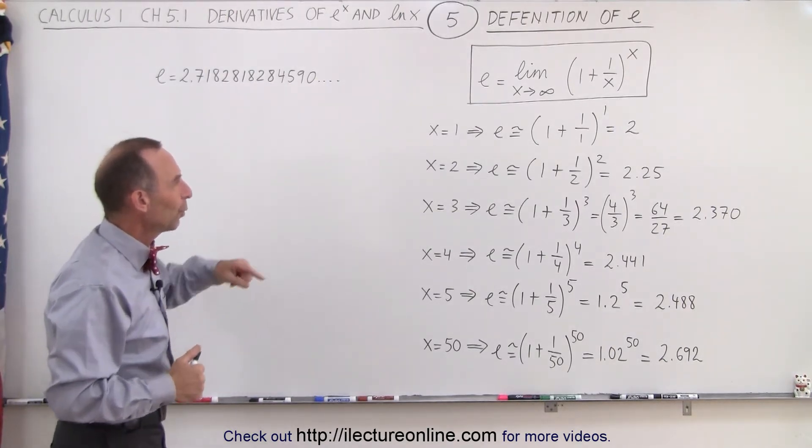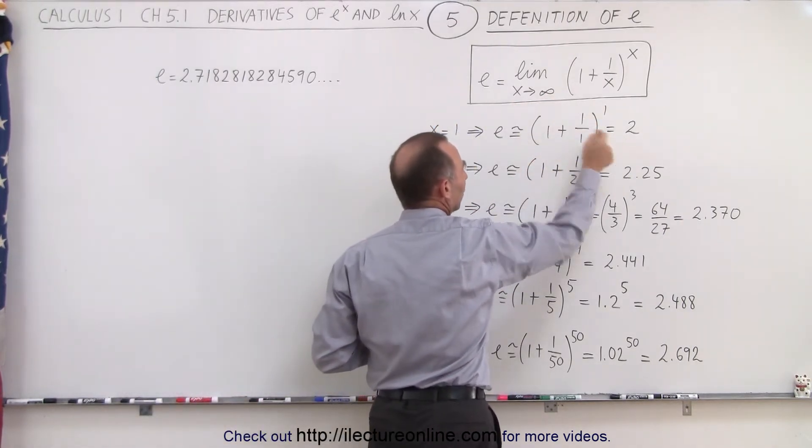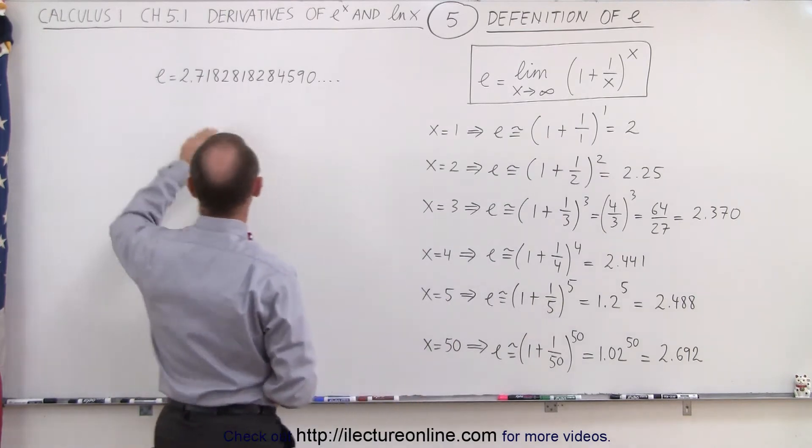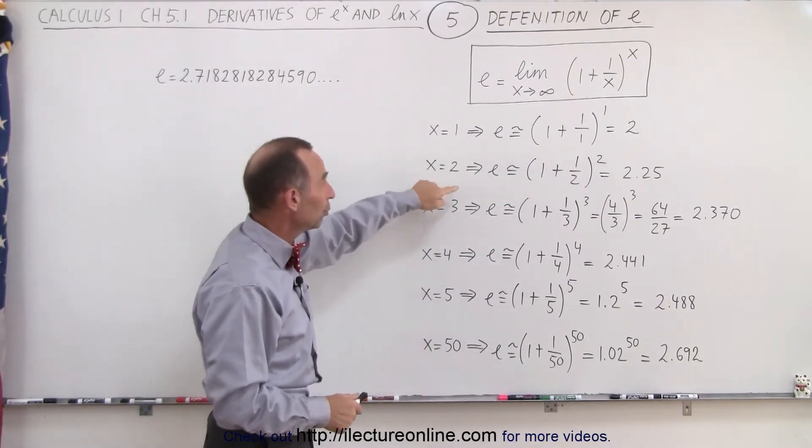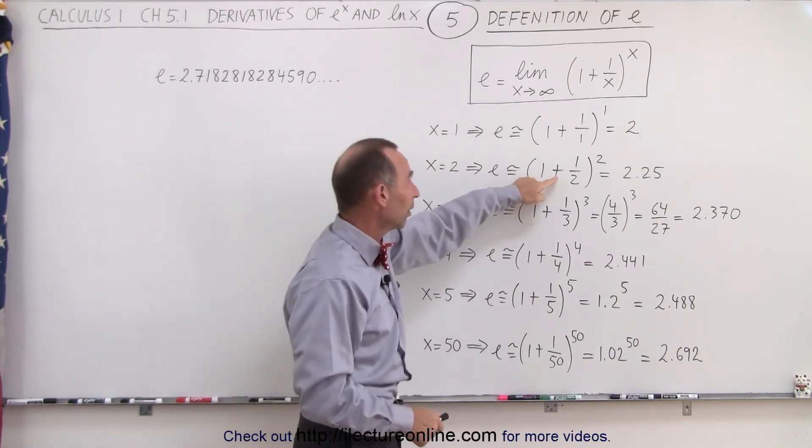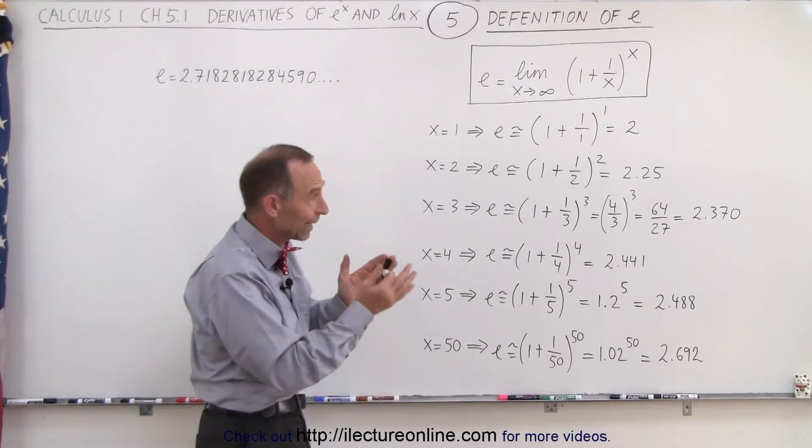So what happens when you let x equals 1 and you plug it in here? We have 1 plus 1 over 1 to the first power, which is equal to 2. Well, that's not quite 2.7. Now, when we let x equals 2, you can see now we have 1 plus 1 over 2 raised to the second power, which is 2.25. So you're getting a little closer.